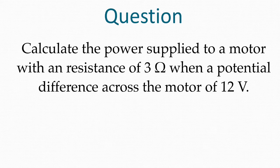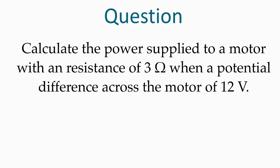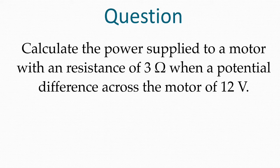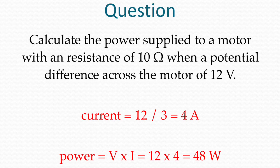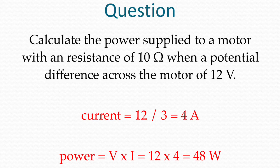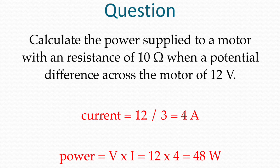Calculate the power supplied to a motor with a resistance of 3 ohms when the potential difference across the motor is 12 volts. Pause the video again while you answer in your book. As we did on the previous question, we find the current by dividing the voltage, 12 volts, by the resistance of 3 ohms to get 4 amps, and then times the 4 amps by the 12 volts to get 48 watts of power.